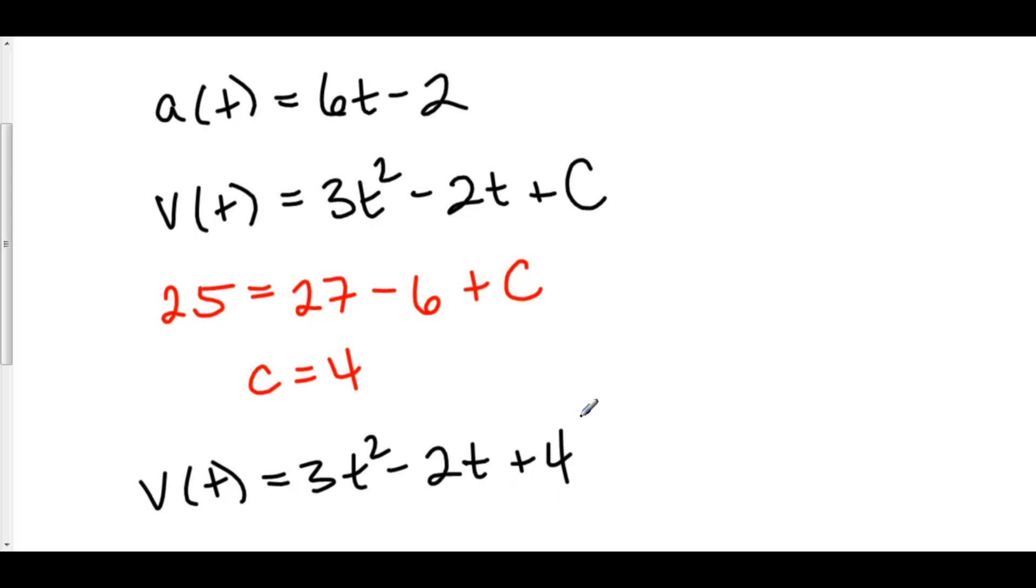So for example, if I wanted to find the velocity at time t equals one, I know that at time t equals zero, my velocity was four, and the net change in my velocity is three minus two is one. So my velocity at time t equals one would be five.